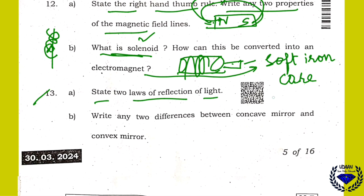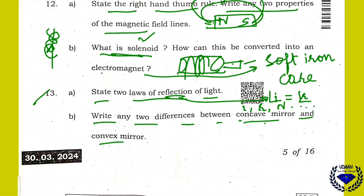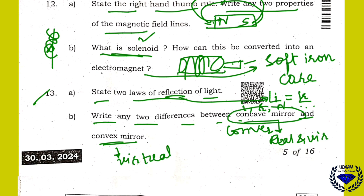State two laws of reflection of light: the angle of incidence is always equal to the angle of reflection; the incident ray, reflected ray, and the normal at the point of incidence all lie in the same plane. Differences between concave mirror and convex mirror: a concave mirror is a converging mirror while a convex mirror is a diverging mirror. The image formed by the convex mirror is always diminished; the image by concave can be enlarged or diminished. The image by concave can be real or virtual; by convex it is always virtual. Concave is used in solar furnaces and by dentists; convex is used as a rear-view mirror in vehicles.